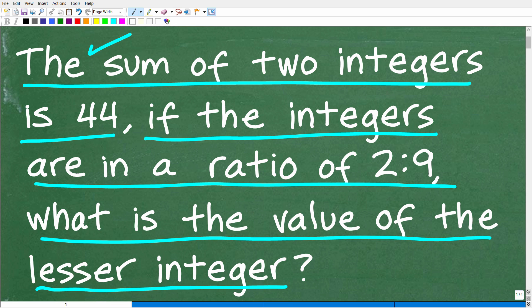Okay, so let's take one more look at this question. The key here is that you need to understand what an integer is. I'll explain this as we get into the solution, but it's numbers like negative 2, negative 1, 0, 1, 2. Effectively, whole numbers, both positive and negative, to include 0. The sum of two integers is 44. If the integers are in a ratio of 2 to 9, what is the value of the lesser integer?